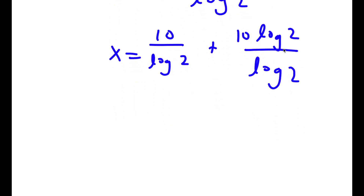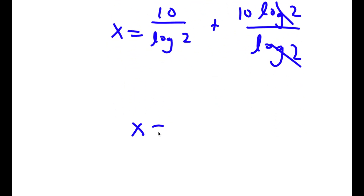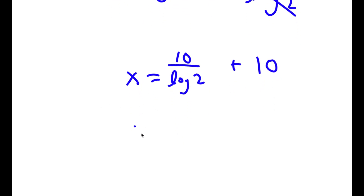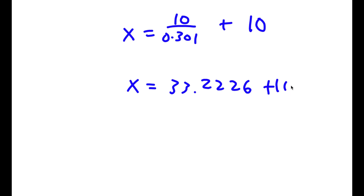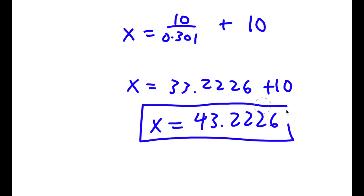Now, log 10 is equal to 1, so I simply have 10 plus 10 log 2, all over log 2. This is the same as 10 over log 2 plus 10 log 2 over log 2. The log 2 terms cancel in the second fraction, leaving x is equal to 10 over log 2 plus 10. Since log 2 equals 0.301, we get 10 over 0.301, which is equal to 33.2226, plus 10, giving us approximately 43.2226. So this is my answer.